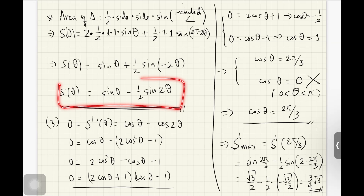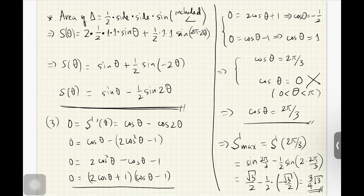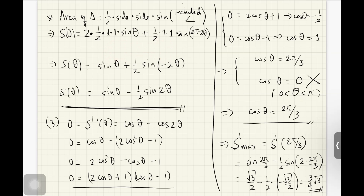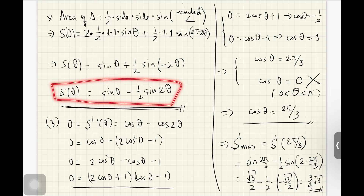This is the answer for the first part. Now we need to find the value of theta that makes it maximum, and also the maximum value itself — using calculus. Since we have an open interval, 0 < theta < pi, we can't check endpoints, so we only look for local maxima by finding where the derivative equals zero.